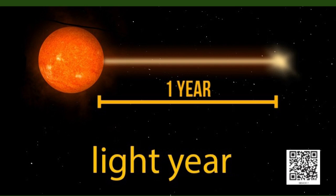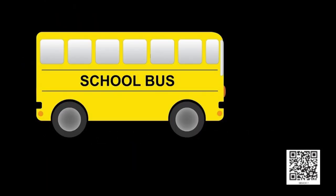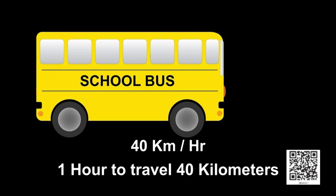Let us now see how long a light year is. You know how fast your school bus travels? Let us say the school bus travels at a speed of 40 kilometers per hour. This means the bus takes 1 hour to travel 40 kilometers.